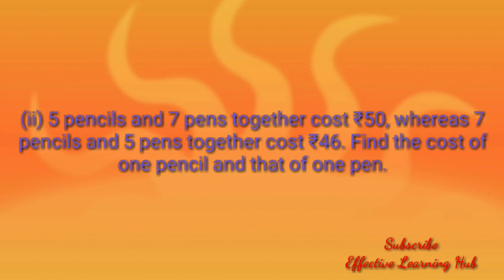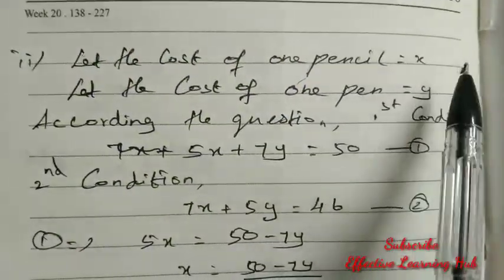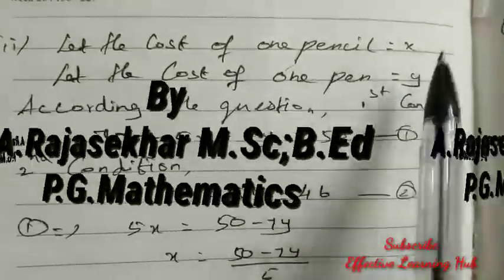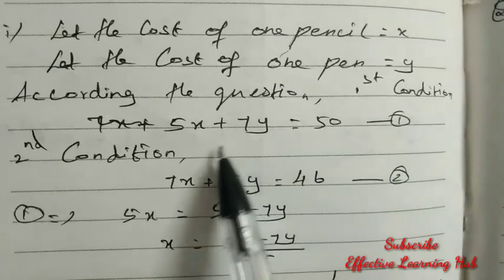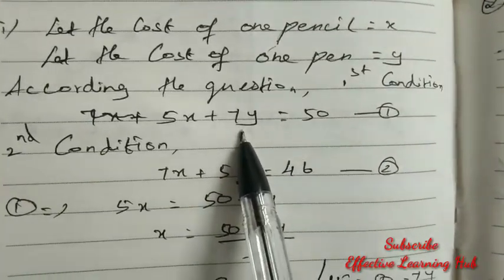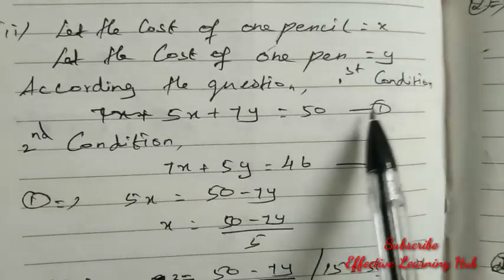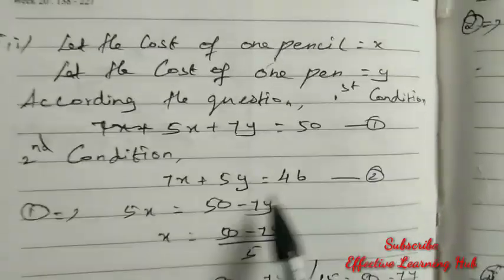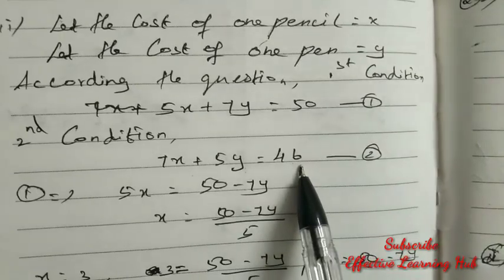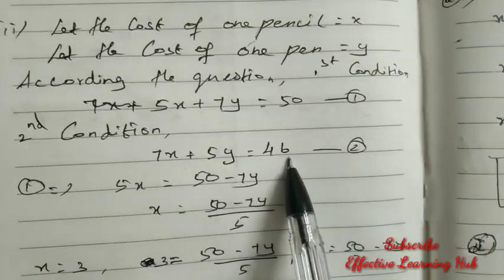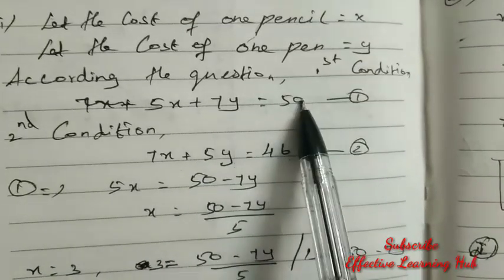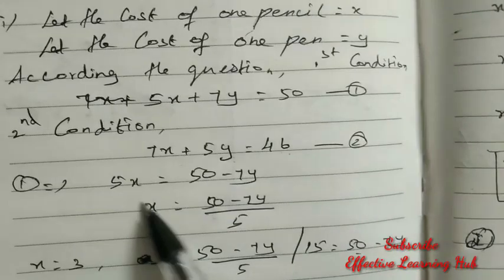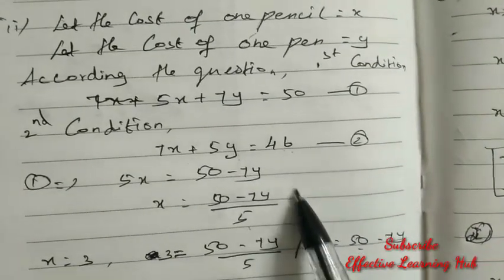Write down the answer. Let the cost of 1 pencil equal to x, let the cost of 1 pen equal to y. First condition: 5 pencils and 7 pens, so 5x plus 7y equal to 50. Second condition: 7 pencils and 5 pens equal to 46, so 7x plus 5y equal to 46. Now, from the first equation: 5x plus 7y equal to 50.